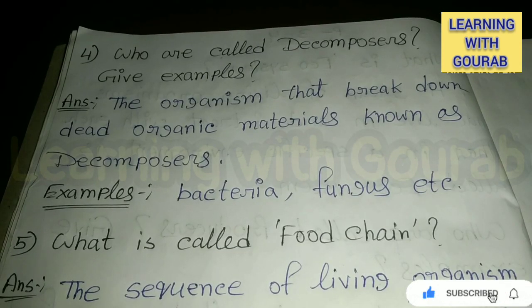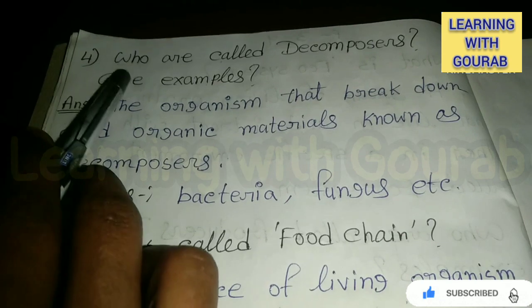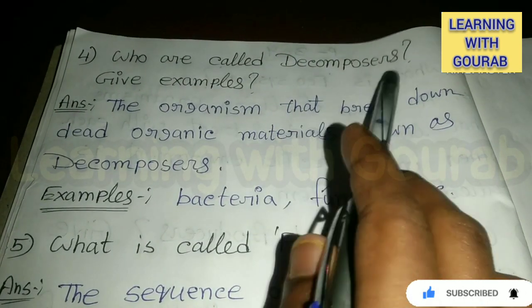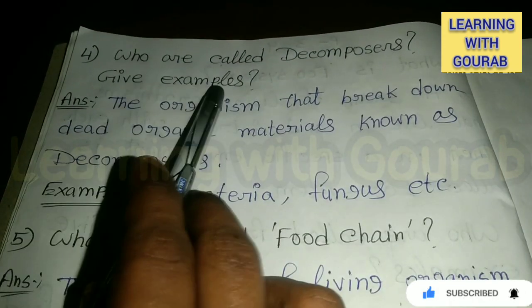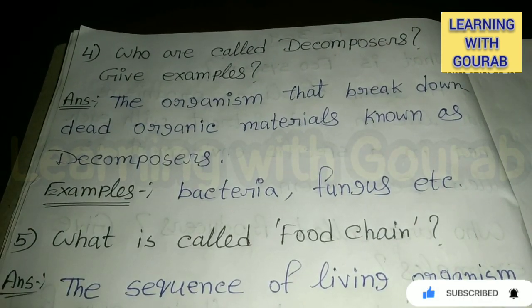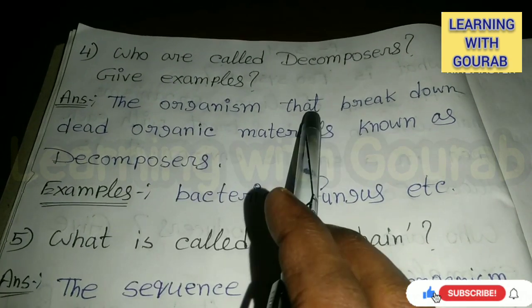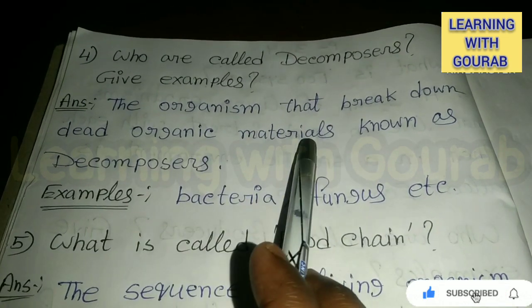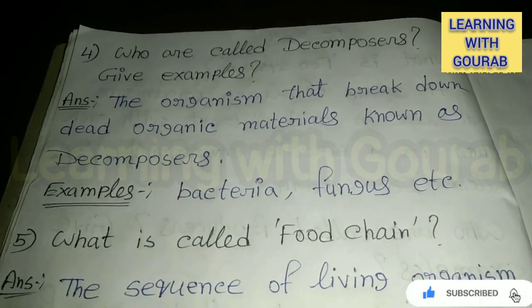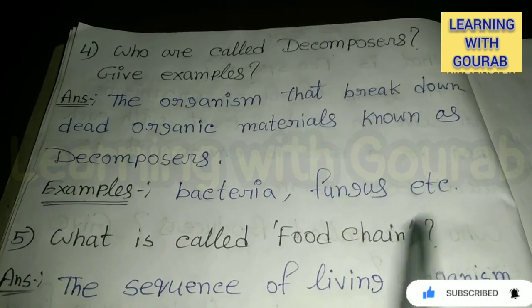Next question: Who are called decomposers? Give an example. Answer: The organisms that break down dead organic materials are known as decomposers. Examples are bacteria, fungus, etc.